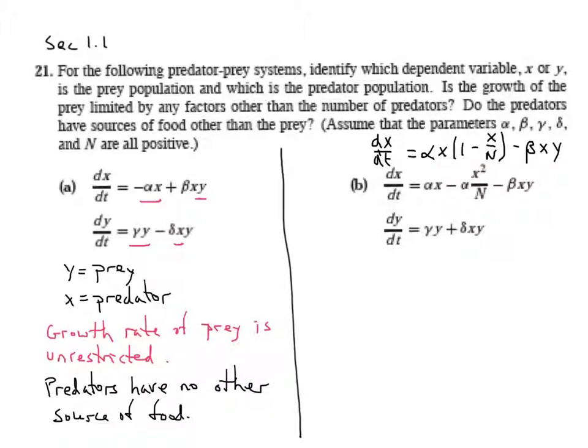As x approaches n, this positive term starts slowing us down, and so we're limited by our carrying capacity. However, there's a constant decrease of our population due to the interactions between x and y.